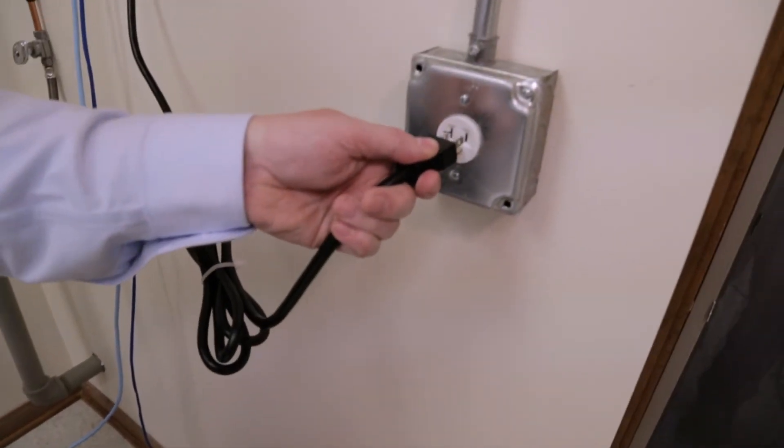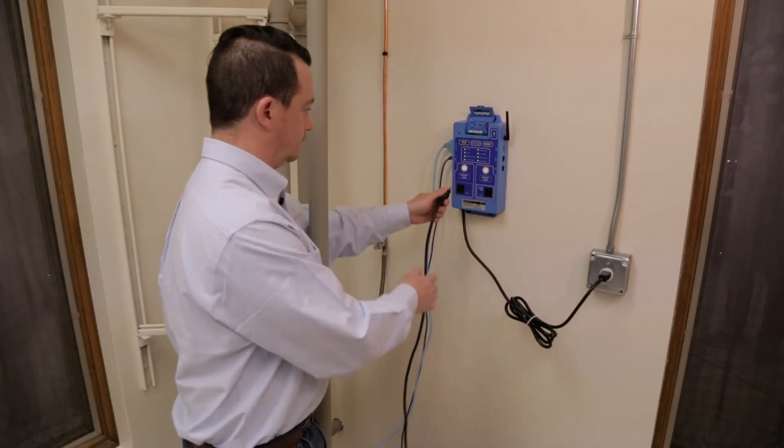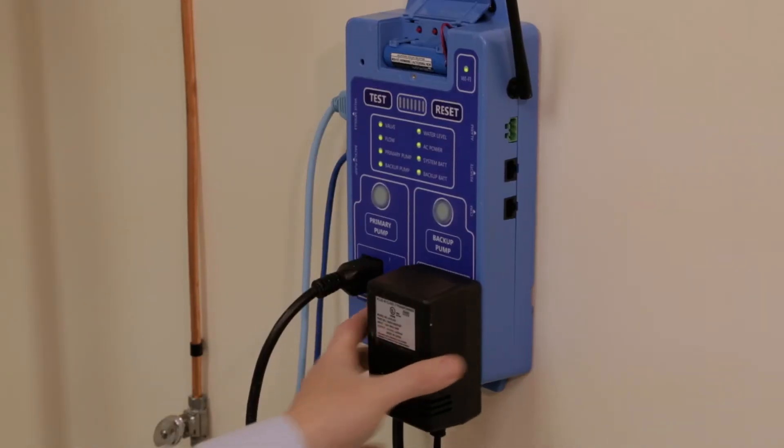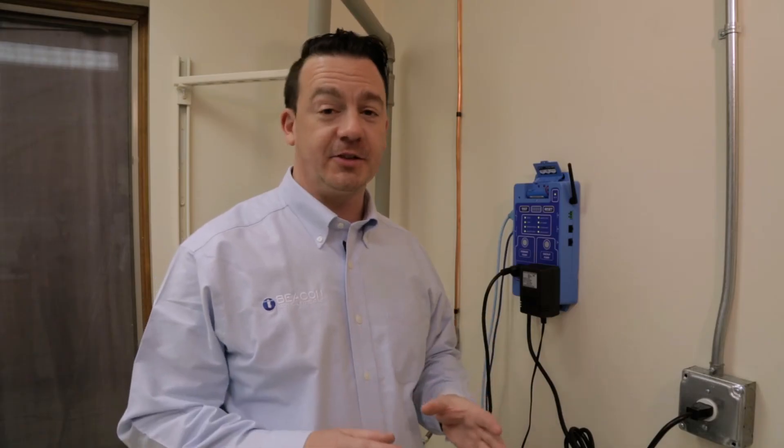Plug the controller power cord into the AC wall outlet. Plug the primary AC sump pump power cord and the DC backup charger into the controller. The sump pump installation is now fully powered.